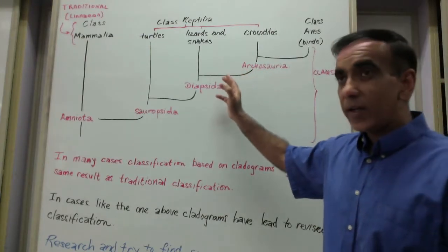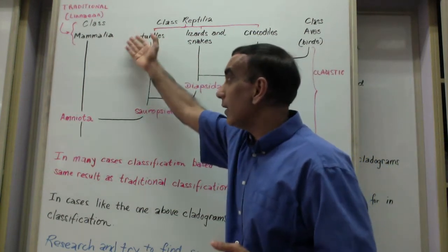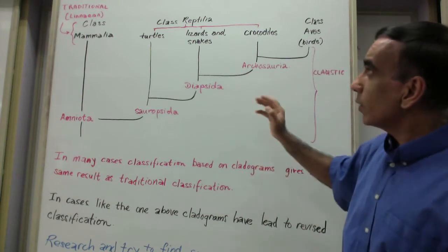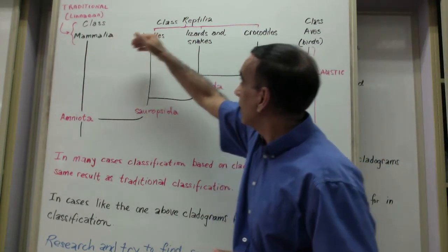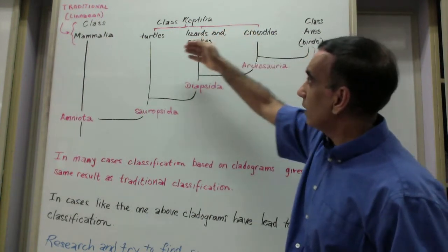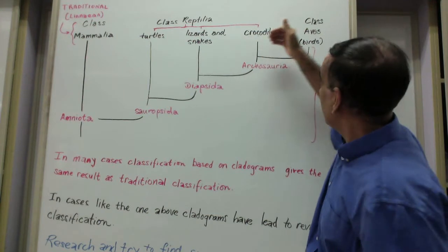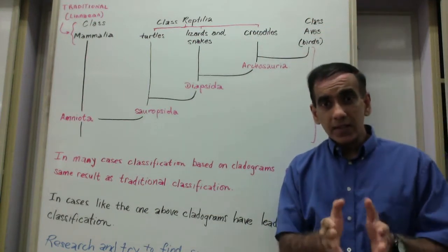This diagram provides a good example allowing us to compare traditional or Linnaean taxonomy with modern-day cladistics. Here we can see that the class Mammalia goes into one group and the class Reptilia includes turtles, lizards and snakes and crocodiles. A separate class, the Aves, includes the birds.